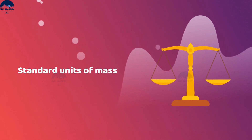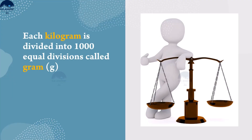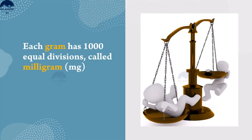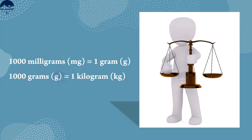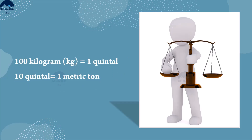Units of mass: the SI unit of mass is the kilogram. Each kilogram is divided into 1000 equal divisions called grams. Each gram has 1000 equal divisions called milligrams. Thus, 1000 milligrams equal one gram, 1000 grams equal one kilogram, 100 kilograms equal one quintal, and 10 quintals equal one metric ton.